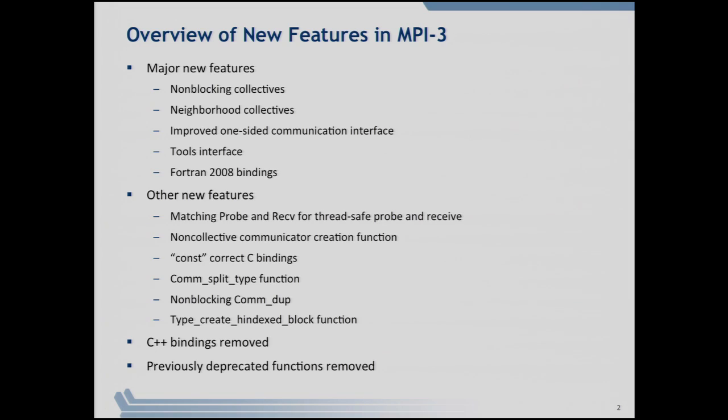So, what's new in MPI-3? Non-blocking collectives — we saw those this morning: all the iBroadcasts, iBarriers, and so on. Neighborhood collectives that Bill just talked about. There is also an improved one-sided communication interface. One-sided communication was defined in MPI-2 back in the late 90s, but it had some drawbacks and limitations. MPI-3 has extended that and added new features to make it more usable for applications and as a target for higher-level programming models.